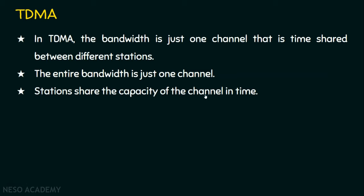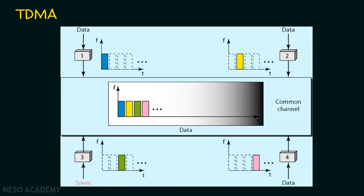Stations share the capacity of the channel in time. Let's see the diagram. In the previous example we saw FDMA; now we will see TDMA. If you observe, at this time Station 1 is using the channel; at the second time slot, Station 2 is using it; at the third time slot, Station 3 is using it; and then Station 4 is using the channel. Not all data are transmitted at the same time — time is allotted to every station. The entire channel is given to one station, then after transmitting that data, it is given to the next station. So TDMA is a time-shared approach.